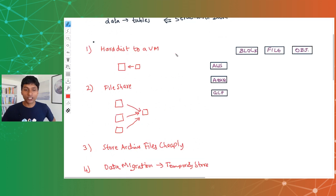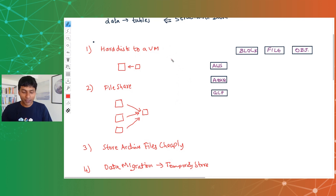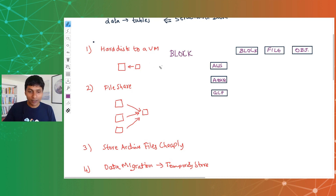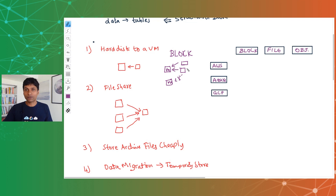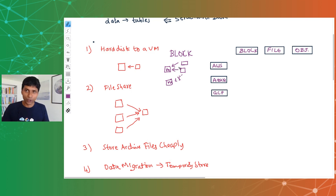There are different types of storage for different use cases. When you want to attach a hard disk to a virtual machine, the type of storage you would use is block storage. Block storage is nothing but attaching a hard disk to your virtual machine — you can attach one or multiple hard disks to a single VM. However, once a hard disk is attached to one VM, you cannot attach it to another VM. Typically, block storage devices can only be attached to one VM at a time. This is like a hard disk attached to your computer — it's only attached to one specific computer.